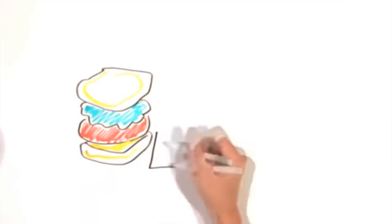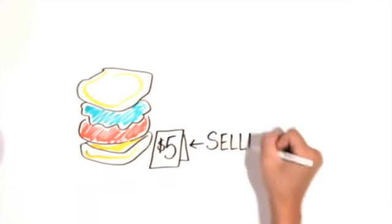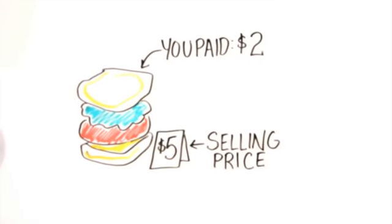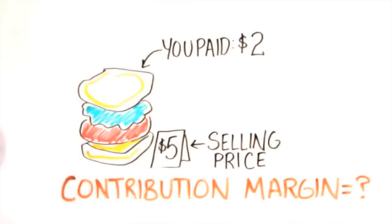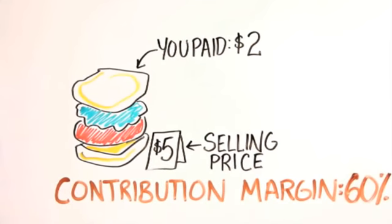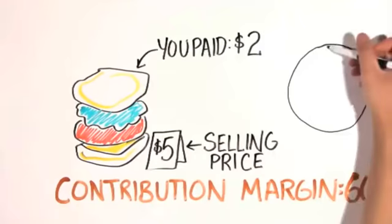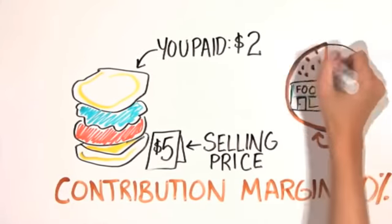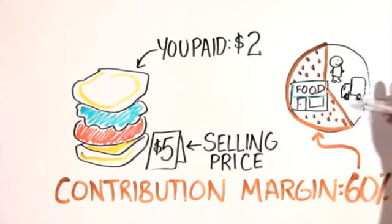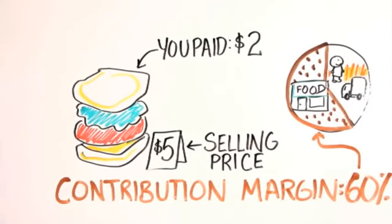Let's play a little game. You're selling a sandwich for five dollars and you pay two dollars for the food — what would your contribution margin be? Go ahead, pause the video and pencil it out. Three-fifths of the money is paying for staff and helping the store stay open, and two-fifths goes to the farmers, bakers, warehouse workers, truck drivers, and so on — so contribution is 60 percent.